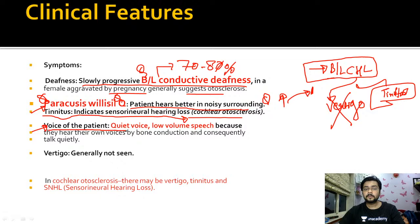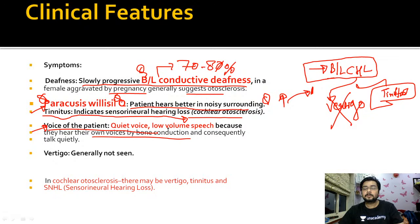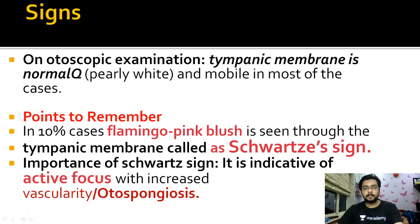One more thing: that pregnant lady was very polite - not out of respect to doctors, but because she was hearing her own voice by bone conduction. Due to this pathology, she spoke very quietly and in a low volume. In conductive hearing loss, air conduction is not possible, so whatever goes through is via bone conduction. That is why she was polite. Examiners may describe this as a 'polite' or 'low-volume-speaking' patient.